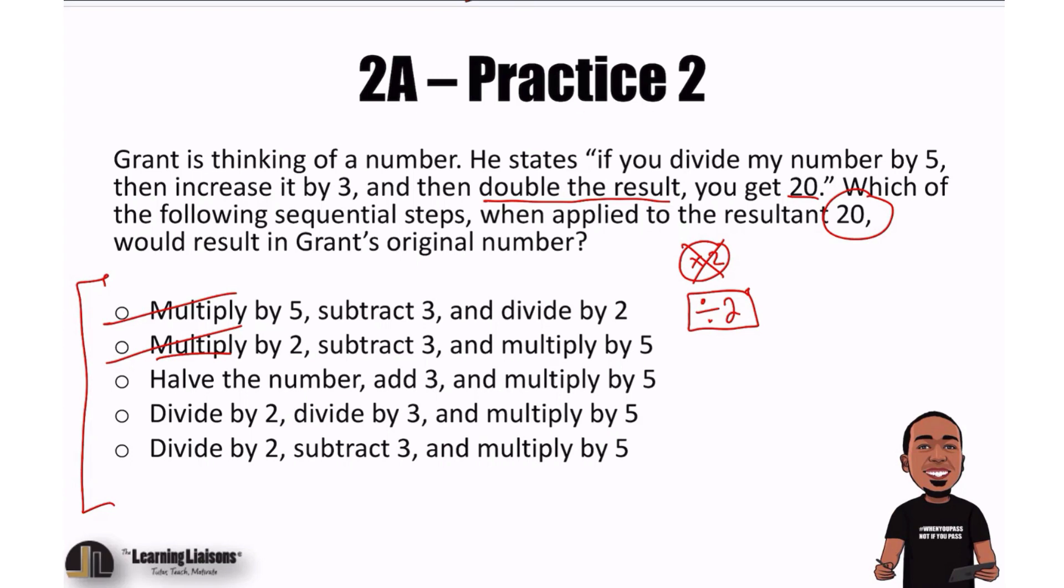Next, he says the second to last step was increase by 3. The opposite of increase is decrease. We would subtract 3 as our next step. Let's go ahead and check it out. This one has add 3, not subtract. Not it.